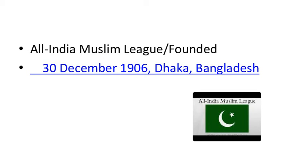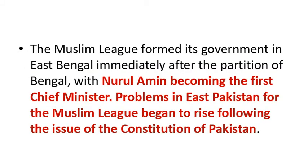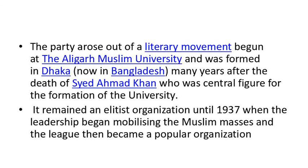The All India Muslim League was founded in 1906 in Dhaka, Bangladesh. This is the flag of the Muslim League. The Muslim League formed its government in East Bengal immediately after the partition of Bengal, with Nurul Amin becoming the first chief minister. Problems in East Pakistan for the Muslim League began to rise following the issue of the Constitution of Pakistan. The party arose out of a literary movement begun at Aligarh Muslim University and was formed in Dhaka. Many years after the death of Syed Ahmed Khan, who was the central figure of its formation, it remained an elite organization until 1937, when the leadership began mobilizing the Muslim masses and the League became a popular organization.